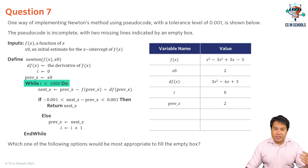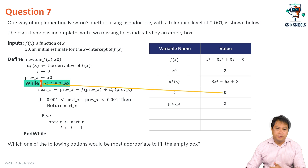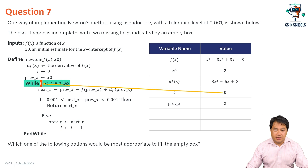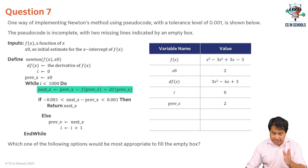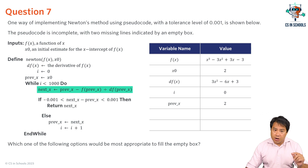Now we enter the while loop. We evaluate the condition following the while: substituting i = 0, we check whether 0 < 1000, which is true, so we enter the loop. The next line calculates the next value of x — our refined guess of the x-intercept. We start with previous_x = 2, and this line refines our guess using the Newton's method formula.